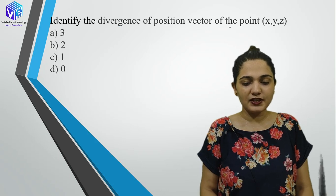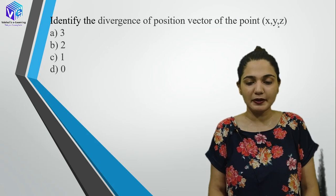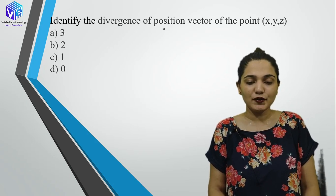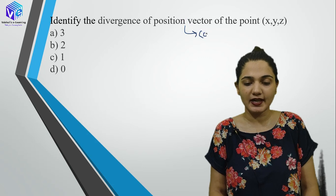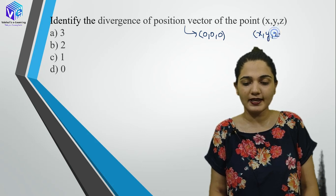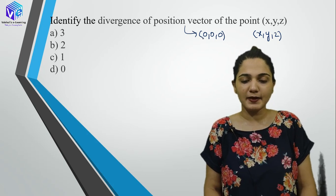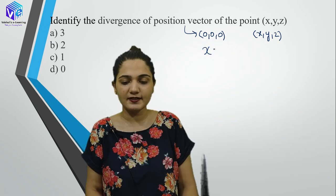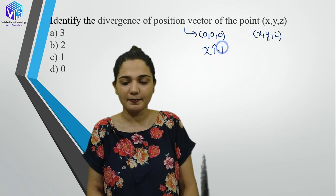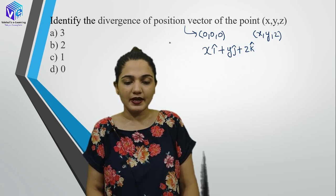Next: identify the divergence of the position vector of the point (x, y, z). We know the position vector is drawn from point (0,0,0) to point (x, y, z), so the vector is x·i-cap + y·j-cap + z·k-cap. Now divergence means del/del-x of Ax + del/del-y of Ay + del/del-z of Az. Here Ax=x, Ay=y, Az=z.